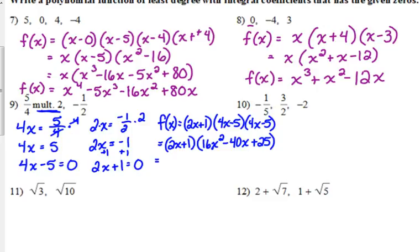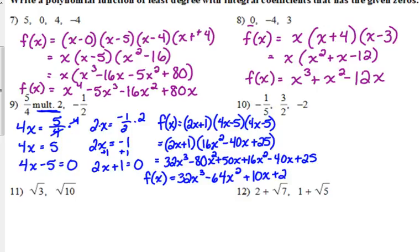Then we have a binomial times a trinomial. That's why we did this the other day. 2x times 16x squared is 32x cubed. 2x times negative 40x is negative 80x squared. 2x times 25 is 50x. And then everything's multiplied by 1. So 16x squared minus 40x plus 25. And finally I can combine my like terms. 32x cubed. Negative 80 plus 16 is negative 64x squared plus 10x plus 25. That one took a little while.